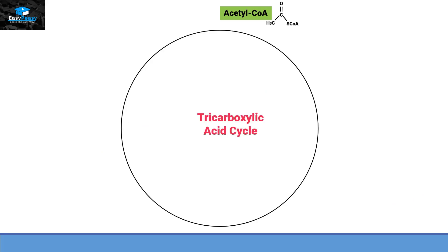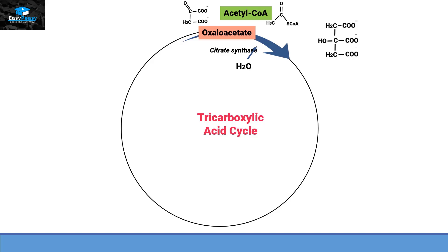This is the acetyl-CoA, and this is the cycle it is going to enter. Within this cycle we have a compound called oxaloacetate — it is a four-carbon compound. Oxaloacetate and acetyl-CoA, with the help of an enzyme called citrate synthase and water, will combine and make a compound called citrate, with the release of coenzyme A.